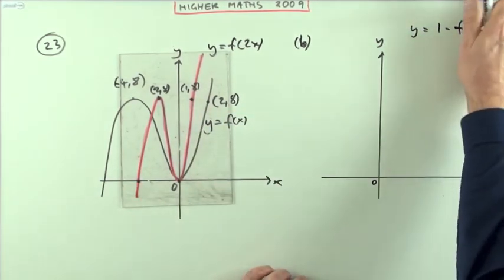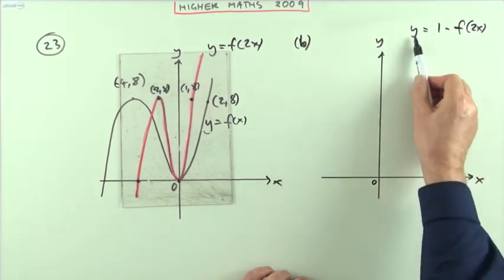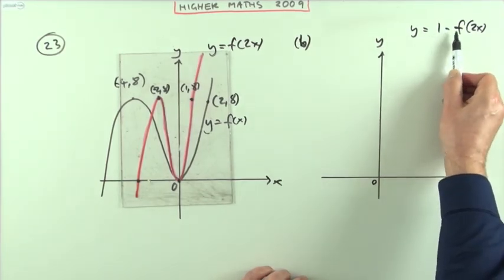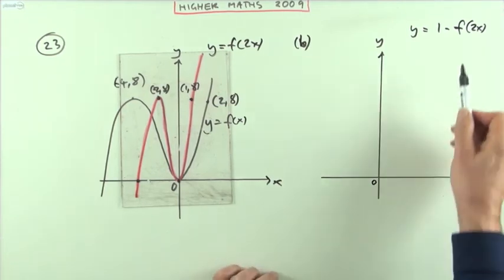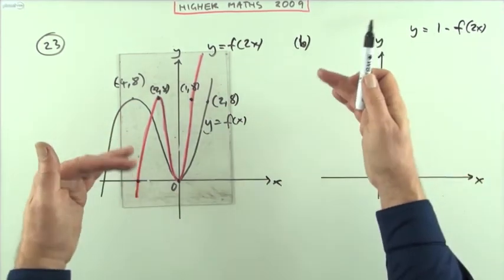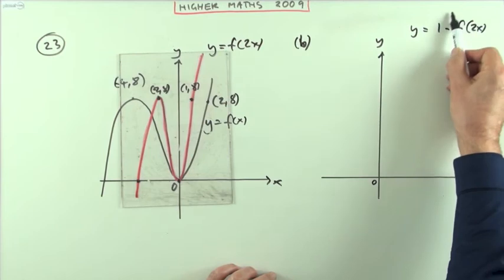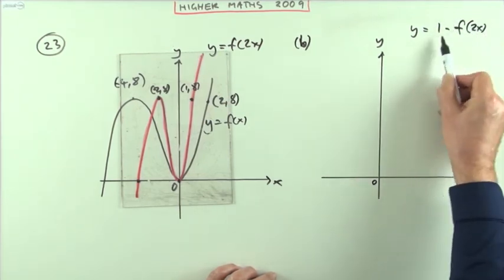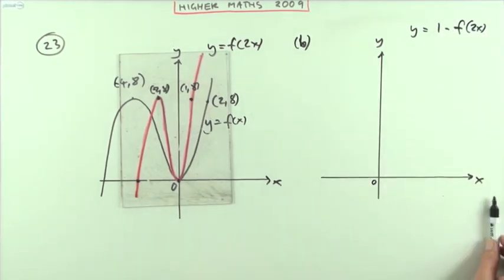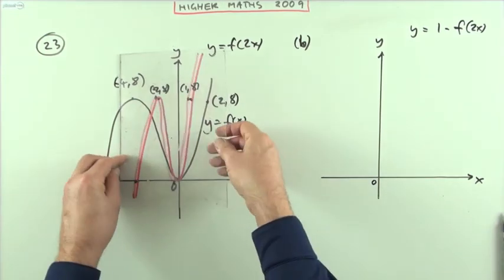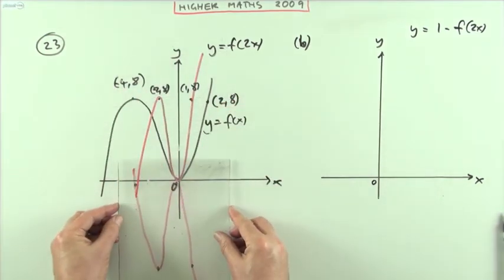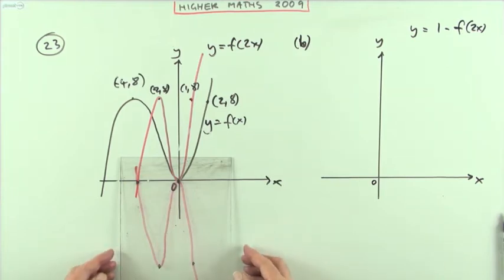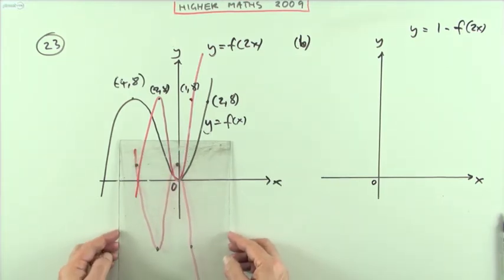Now this time all the changes are taking place outside. Now what this says is the new y coordinates will be 1 take away the old ones. Now subtracting the old ones is going to turn it upside down. So I'm going to be turning it upside down and then finally adding 1 on to everything which means shifting up 1. So it must be you take the graph and you turn it upside down and having turned it upside down you then shift it all up 1. So the new graph should be looking like this.